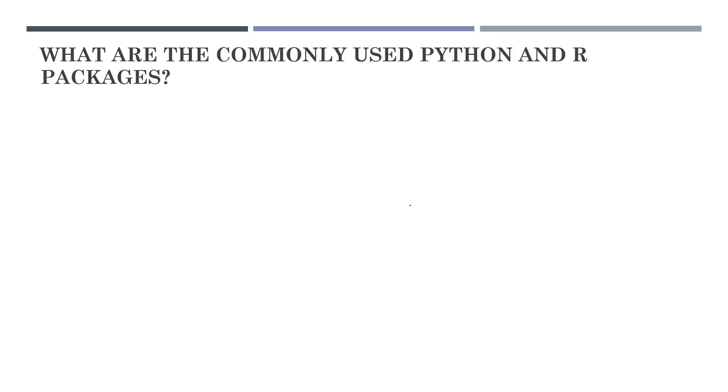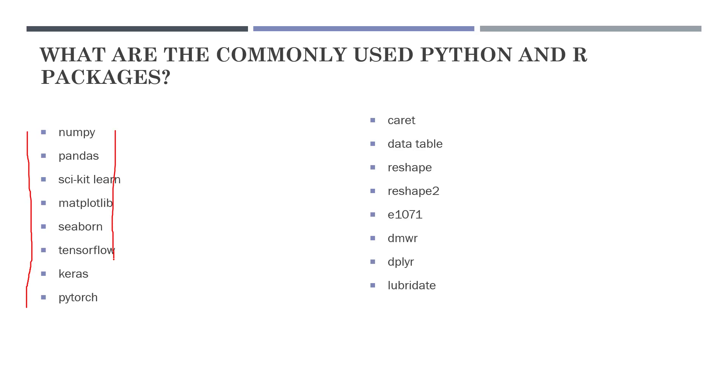Let's go ahead and take the second question. What are the commonly used Python and R packages? The commonly used Python packages are NumPy, Pandas, Scikit-learn, Matplotlib, Seaborn, TensorFlow, Keras, and PyTorch. These are the packages we use in Python, although TensorFlow and PyTorch are also available for R. In R we use packages like Caret, Data.table, Reshape, Reshape2, e1071, dmwr, dplyr, and lubridate.